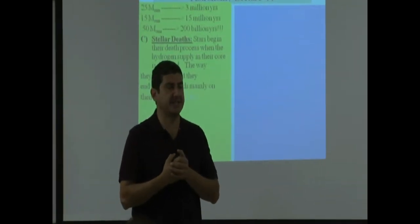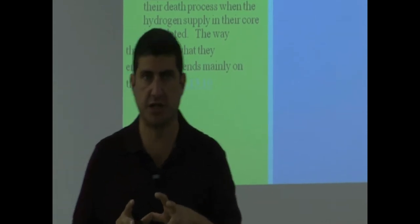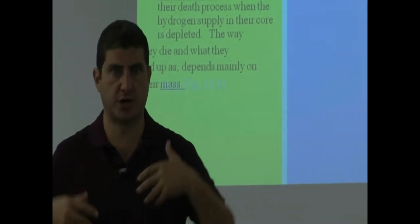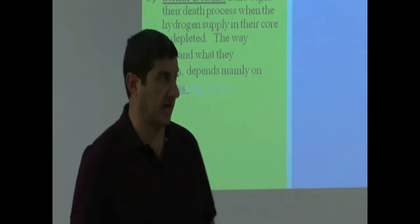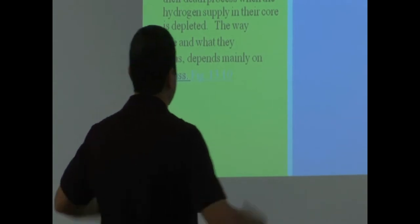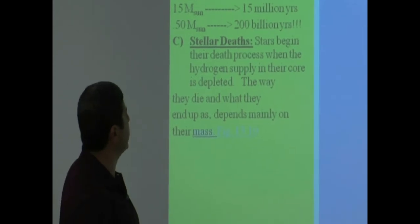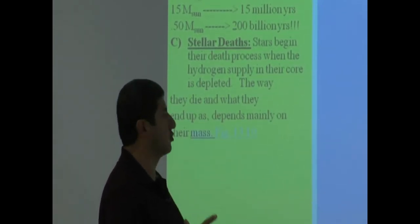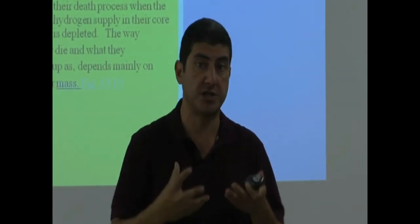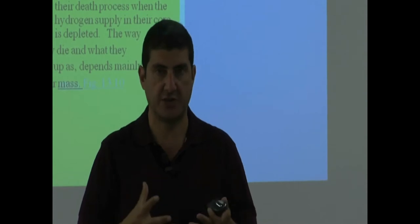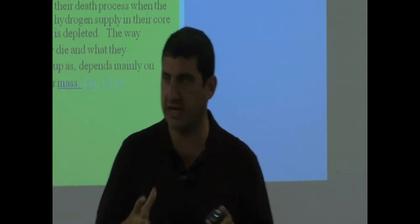We got up to the point last time where we talked about the main sequence life of a star. Now we're going to study stellar death. Stellar death is really interesting - how stars die and what happens to them when they die. The first thing we learned is that stars begin their death process when the hydrogen supply in their core is depleted, so basically the hydrogen that they can use to make energy is gone or not in usable form.